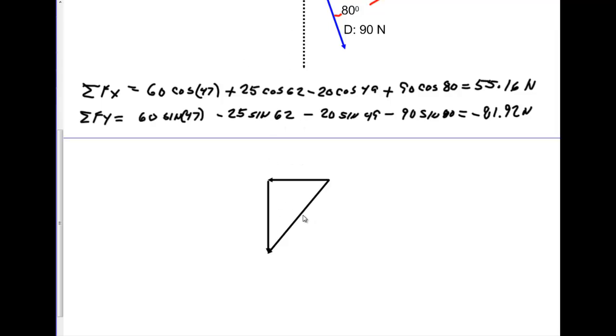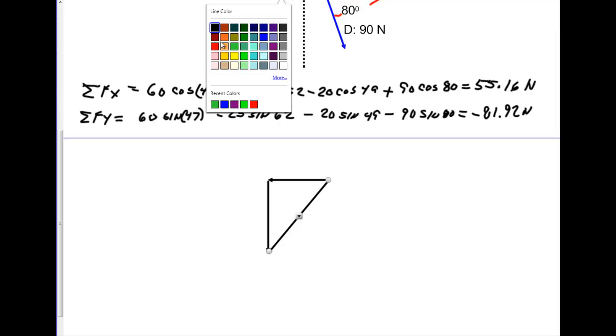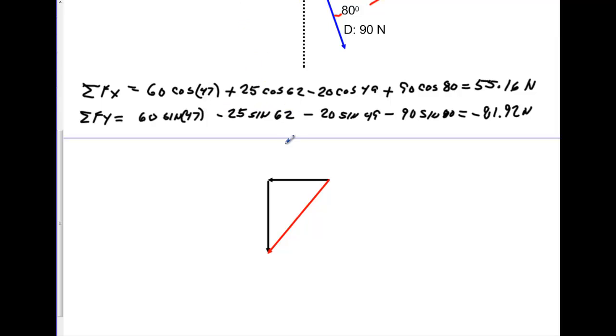We'll go ahead and change this to a different color. Since this is our resultant, we'll make it red. And then we're going to go ahead and label everything. We'll make this value be 55.16. We'll make this value be 81.92. I'm leaving negative off because I'm showing the direction going negative. We will find out our resultant.